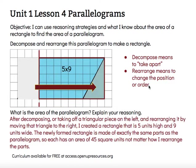So what I wrote is: after decomposing — taking off a triangular piece on the left — and rearranging it by moving that triangle to the right, I created a rectangle that is 5 units high and 9 units wide. The newly formed rectangle is made of exactly the same parts as the parallelogram, so each has an area of 45 square units, no matter how I rearrange the parts.